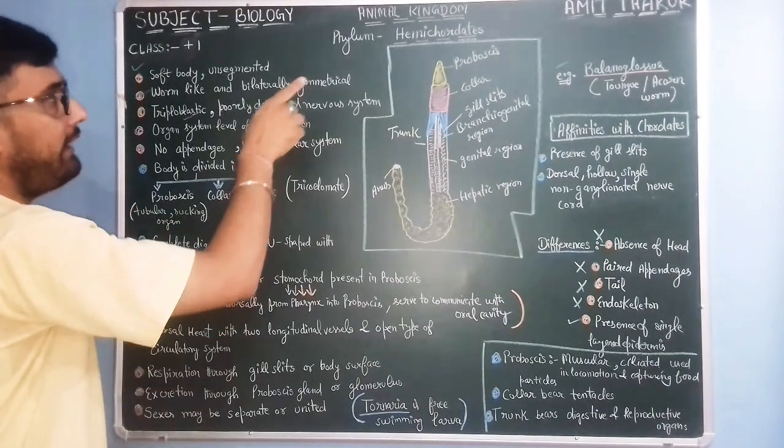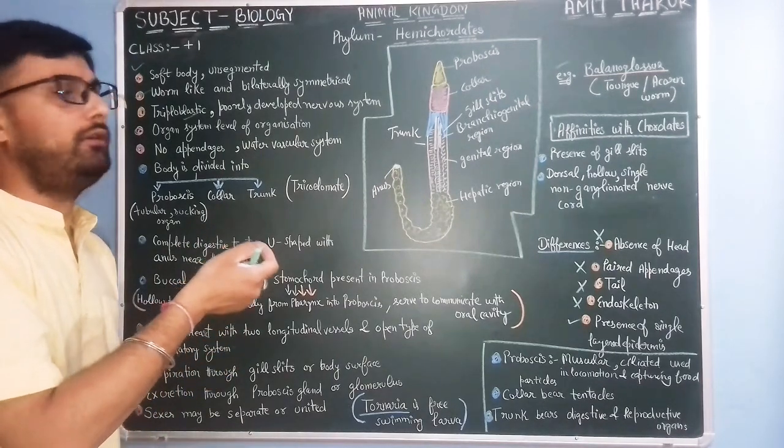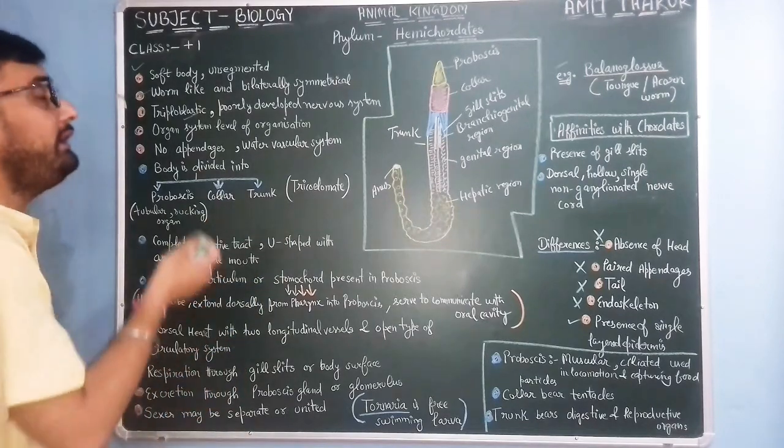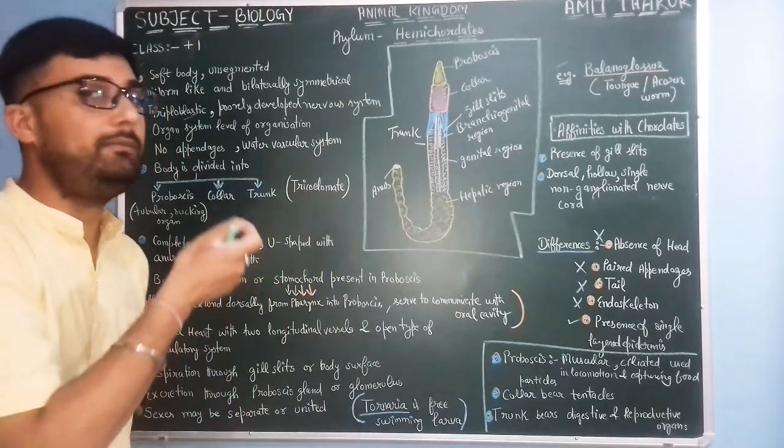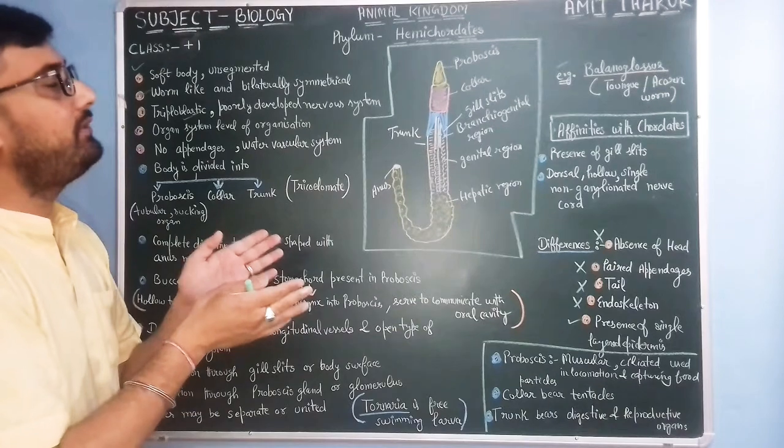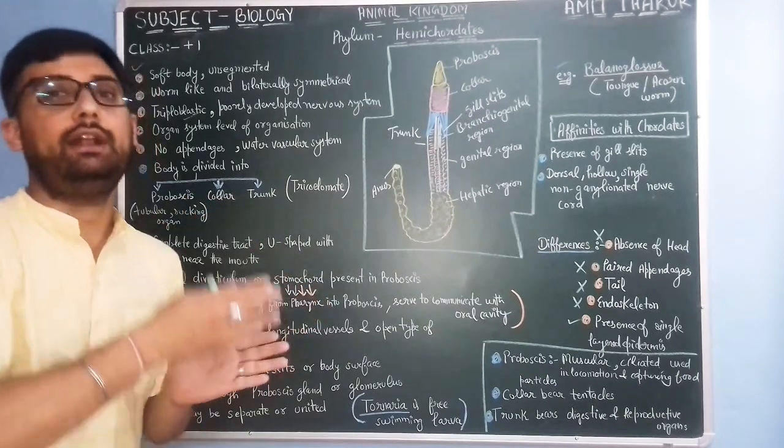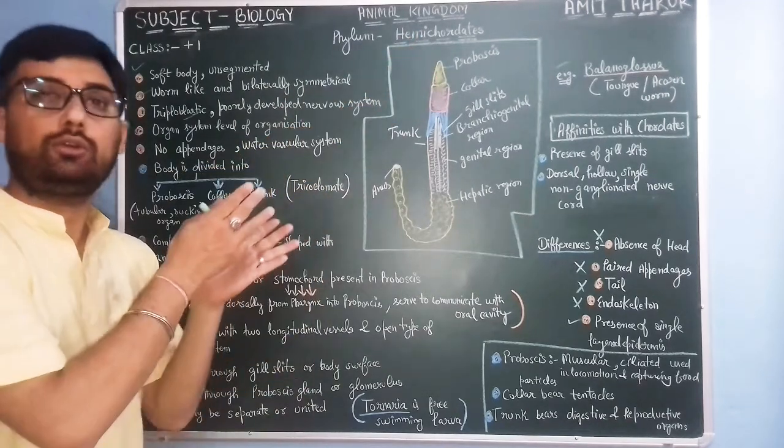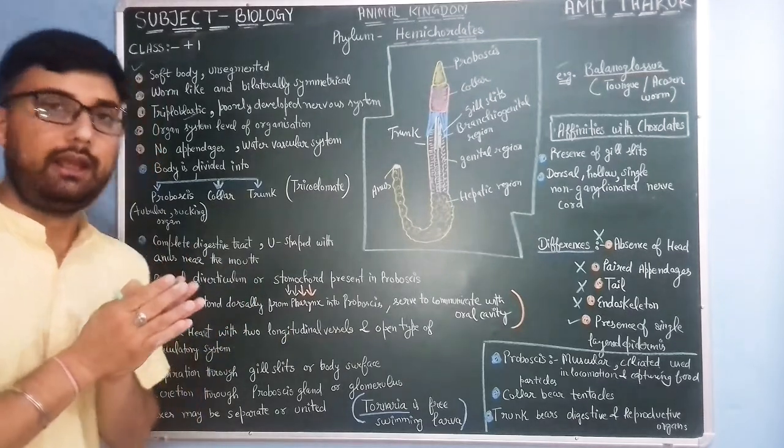Hemicordates have quite similar features to echinodermates and have evolved some features which are similar to chordates. They form a connecting link between non-chordates and chordates. Hemicordates are actually a connecting link between chordates and non-chordate animals.